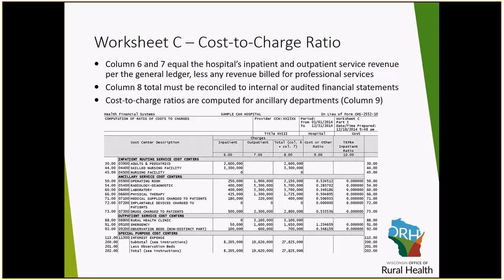A couple of things to note when reviewing your Worksheet C is to evaluate the cost-to-charge ratios reflected in Column 9. We recommend that you compare these ratios back to the prior year filed cost report for comparability. A cost-to-charge ratio of greater than 1.0 means that your costs have exceeded your charges. Cost-to-charge ratios greater than 1 and changes in your cost-to-charge ratios greater than 10% compared to the prior year may be questioned by your Medicare auditor, and we recommend that you be prepared with a comment to explain the change.